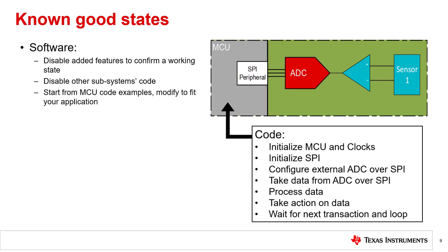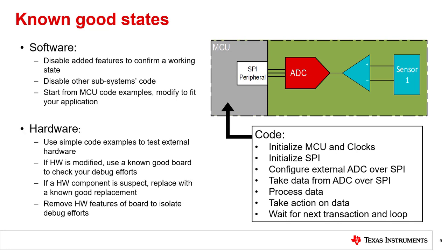You can also explore rebuilding your subsystem code from scratch by utilizing manufacturer-provided known good MCU code examples. You can then slowly add in more advanced features from your original codebase to find issues. From a hardware perspective, you can use those same code examples to ensure your hardware is performing correctly. You can also check out a known good board as a reference, especially if your board is modified. If you suspect a bad component, replace it with a new one to see if the issue is resolved.